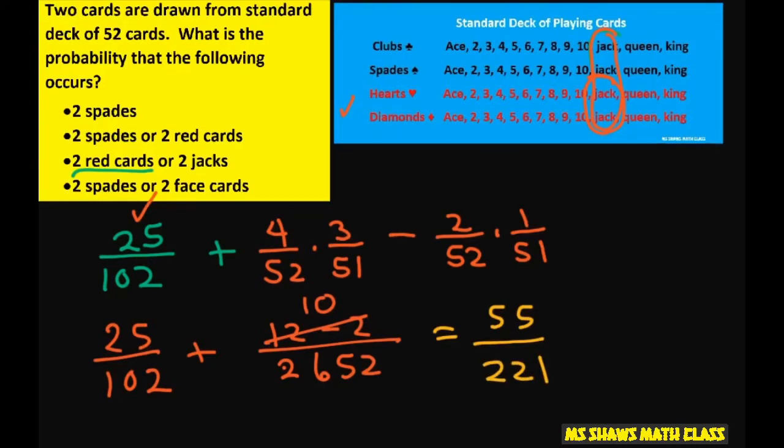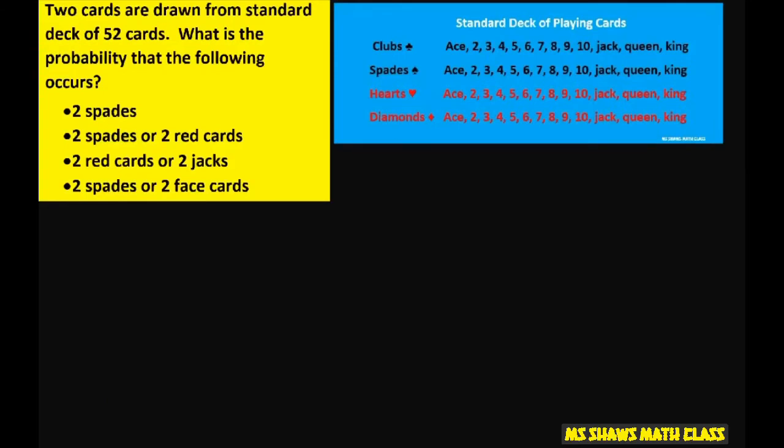And the last one. We have two spades. We already know that one. Two spades is 1 divided by 17. Plus the two face cards. So face cards are these, and there's a total of 12. So that's going to be 12 divided by 52 times 11 divided by 51.